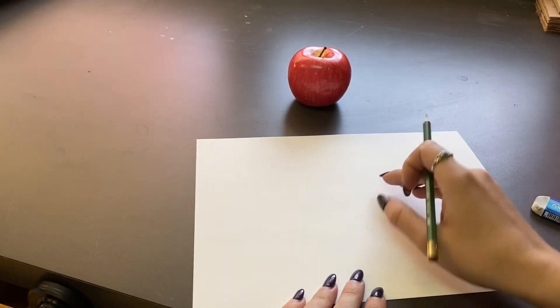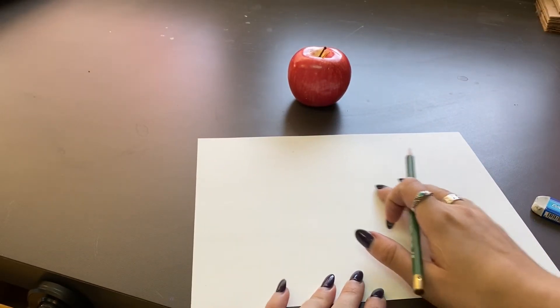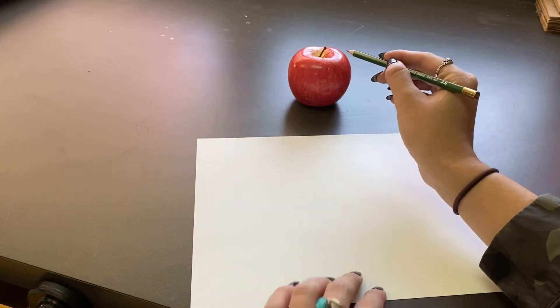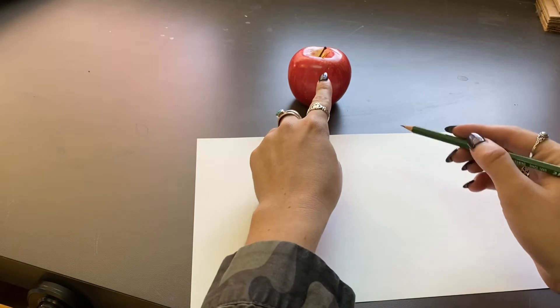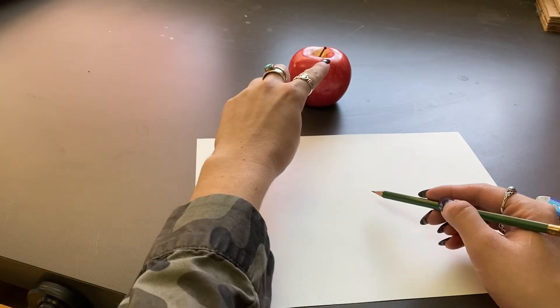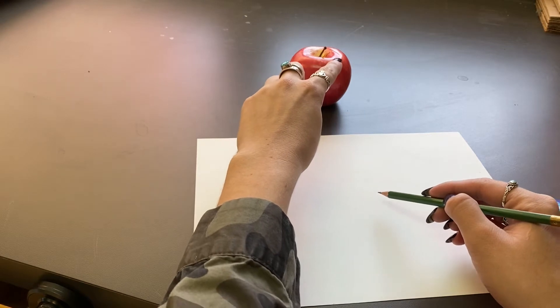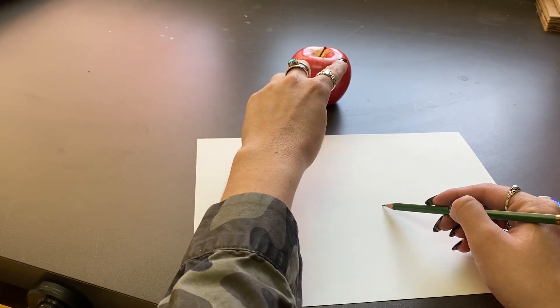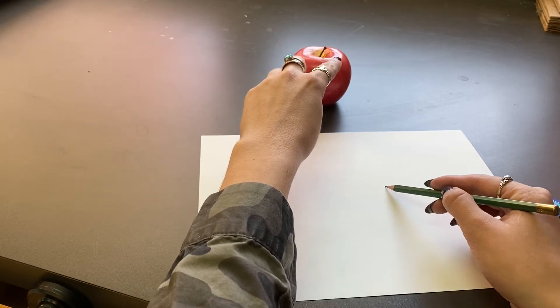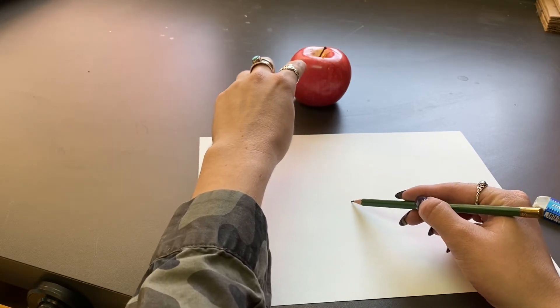Alright, let's learn how to draw a contour line drawing by looking or observing objects. So contour line drawing is a drawing that goes around the outside edges of the object that you are trying to draw. So if you really pay attention to those lines you will end up with a drawing that looks very realistic.